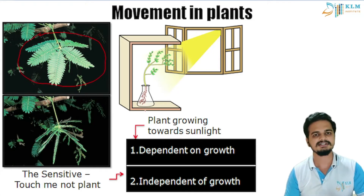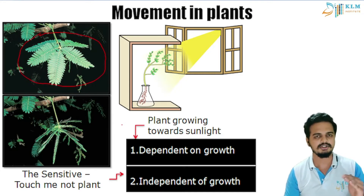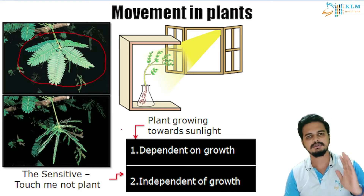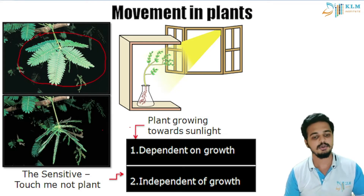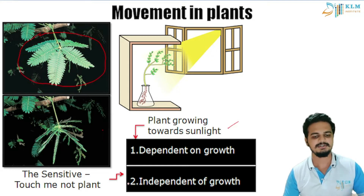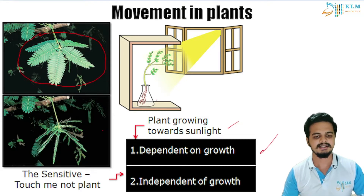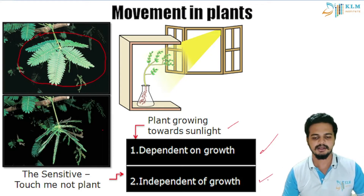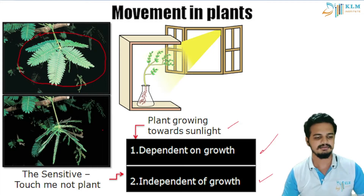Also, you can see that a plant grows only towards sunlight — the upper portion of a plant, that is the stem and leaves, tends to move towards sunlight. Let us classify these two movements: one movement is dependent on growth, that is a plant moving towards sunlight. The other — the touch-me-not plant closing its leaves in response to touch — is independent of growth.